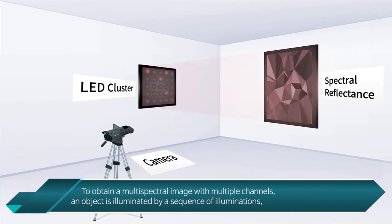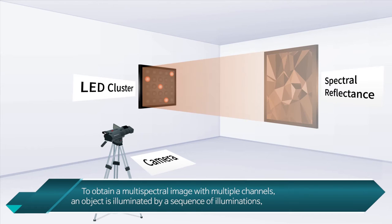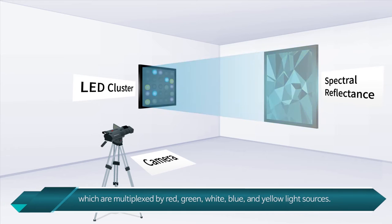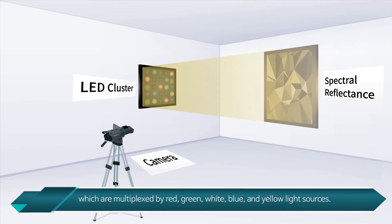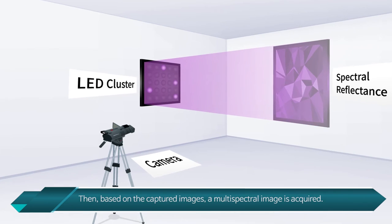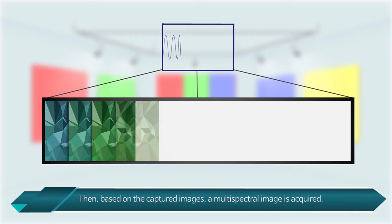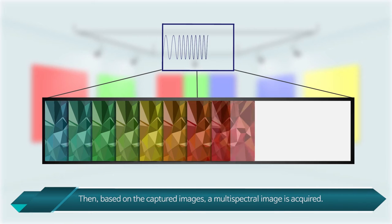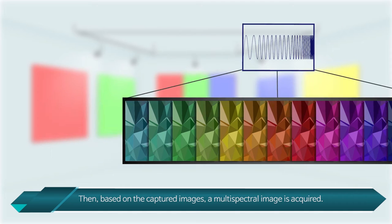To obtain a multispectral image with multiple channels, an object is illuminated by a sequence of illuminations, which are multiplexed by red, green, white, blue, and yellow light sources. An image is captured for each illumination using a synchronized RGB camera. Then, based on the captured images, a multispectral image is acquired.